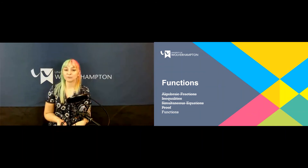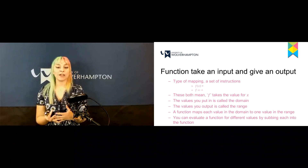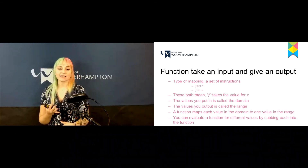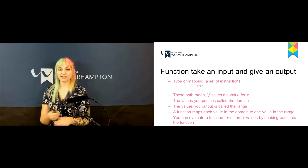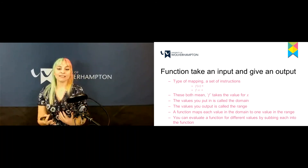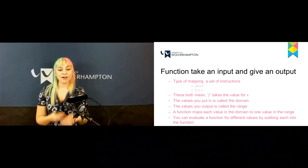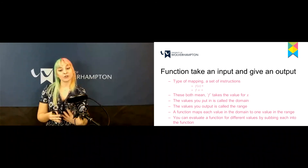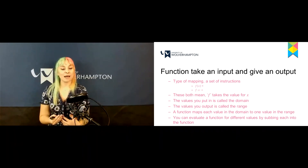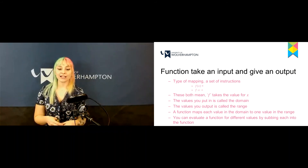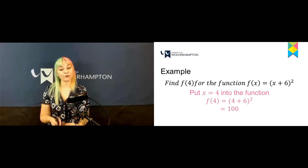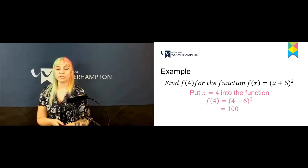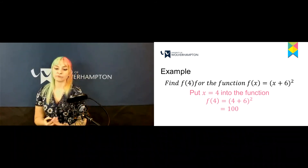The final topic is functions. A function takes an input and gives an output — it is a type of mapping and set of instructions. It can be written as f(x) or f:x, both meaning f takes the value of x. The values you put in are called the domain and the values you output are called the range. A function maps each value in the domain to one value in the range. For example, to find f(4) for f(x) = (x+6) squared, substitute x equals 4, giving 100.